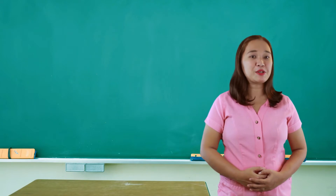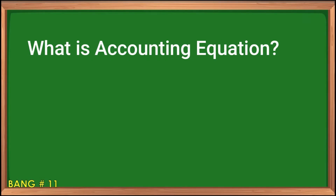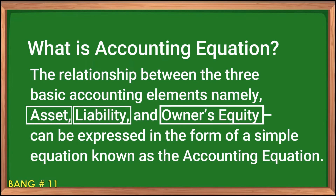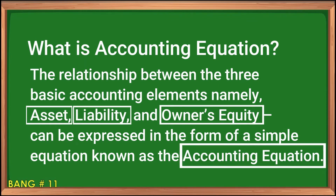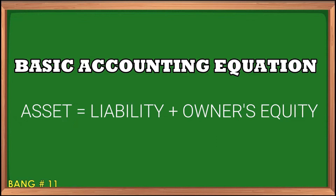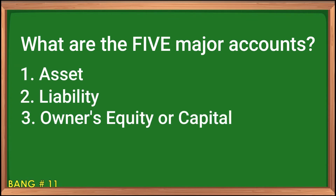Before we proceed to our topic today, let us have a short review first by answering these questions. What is the accounting equation? The relationship between the three basic accounting elements — namely asset, liability, and owner's equity — can be expressed in the form of a simple equation: Asset = Liability + Owner's Equity. What are the five major accounts? The five major accounts are asset, liability, owner's equity or capital, revenue, and expense.